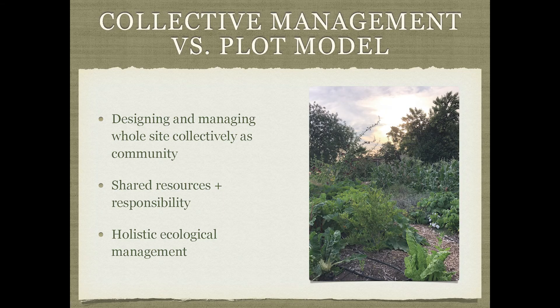The conventional community garden model gives everyone individual plots so they can grow food for themselves and support their own food sovereignty. I really like the collective management model where the whole space is designed and managed collectively rather than as individual plots. I see it as a way to support the whole ecology of the farm or garden, thinking about the space as a whole ecosystem in itself.